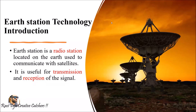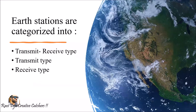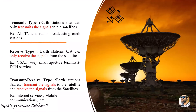Whatever signal that satellite is transmitting, we need to be able to receive it. So an earth station is a radio station located on the earth used to communicate with satellites, and communication here indicates either transmission of the signal or receiving of the signal. These earth stations are categorized into three types: transmit-receive type, transmit type, and receive type. Let's see each one by one.